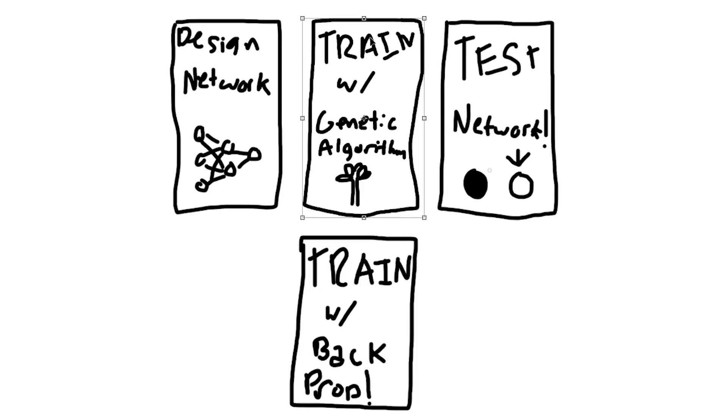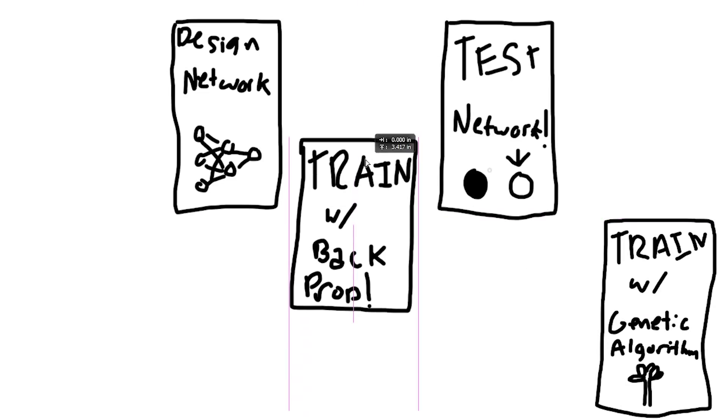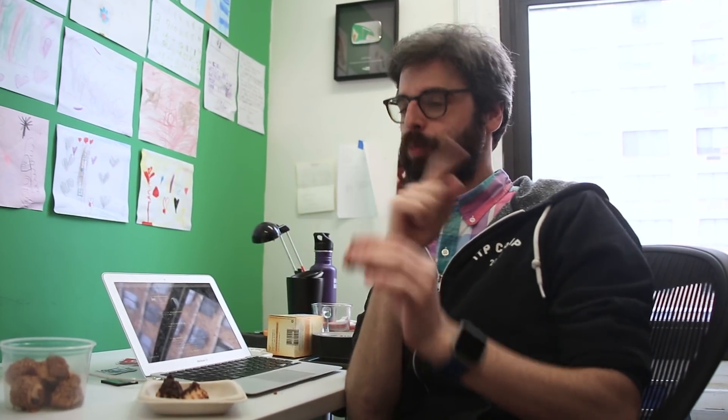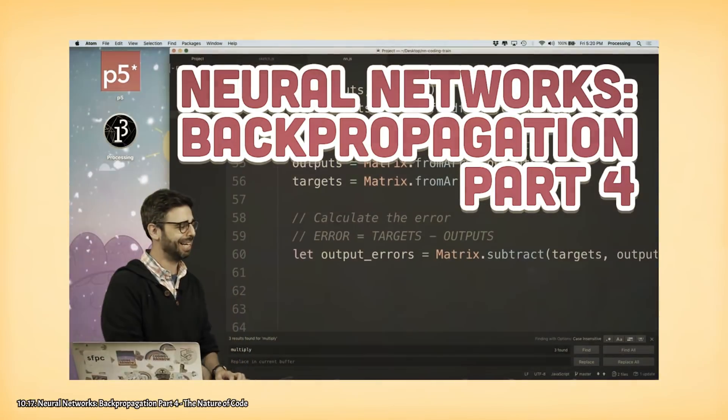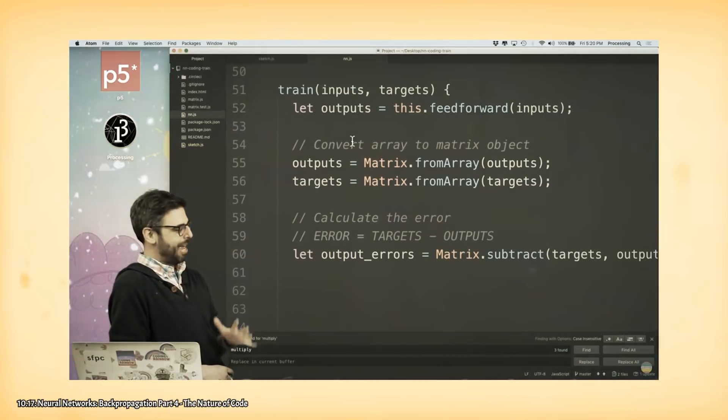And to do this, we simply need to remove the genetic algorithm that we were using for training and put in its place a backpropagation algorithm. Now, we could write this backpropagation algorithm from scratch, but a smart bot once said, why reinvent the wheel if you don't have to? So because this demo was written using JavaScript, we can use the toy neural network library that Daniel Schiffman wrote on his channel, Coding Train, and have his library take care of the algorithms for us.